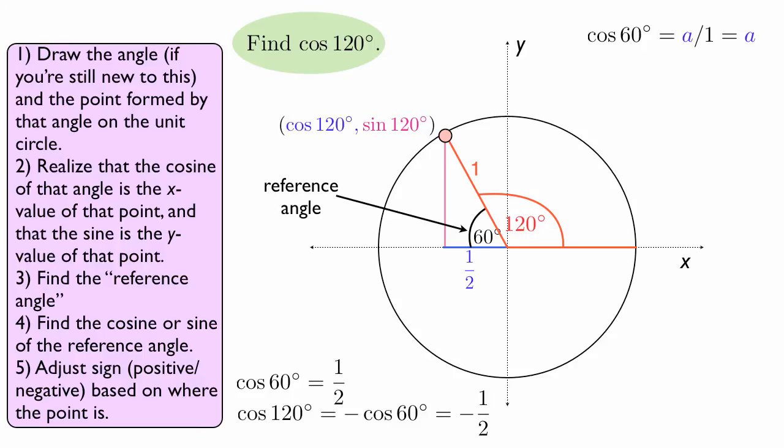And then you adjust the sign based on where the point is. For example, if the point is in quadrant two, then you know that the x value is going to be negative, so you're going to have a negative cosine. And so sine and cosine really depend on where the point formed by that angle lies.